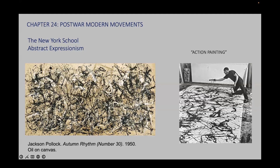Pollock studied in the 1930s with both Thomas Hart Benton and the Mexican muralist David Siqueiros. The rhythmic structure of Benton's style and the mural-scale art of Siqueiros influenced Pollock's pour paintings of the late 1940s and early 1950s. Searching for ways to express primal human nature, Pollock also studied Navajo sand painting and psychologist Carl Jung's theories of the unconscious. His belief that he was painting for the age of the atomic bomb led Pollock to innovate techniques.